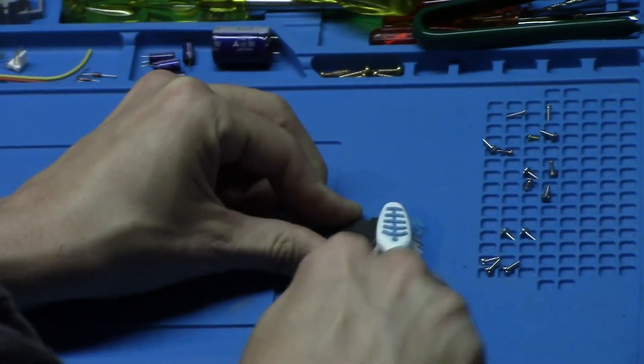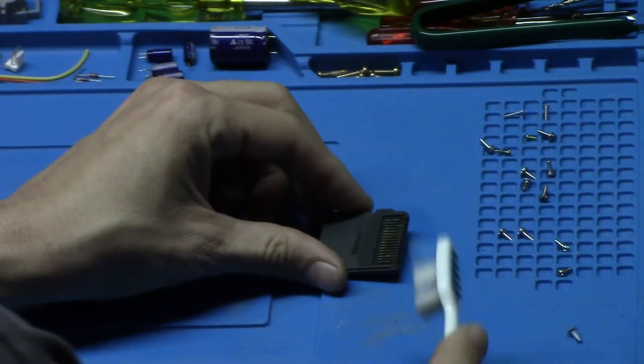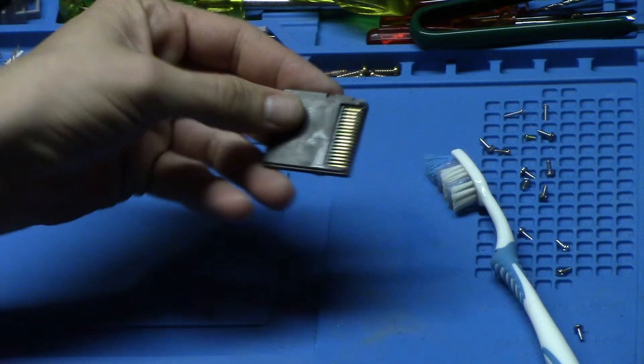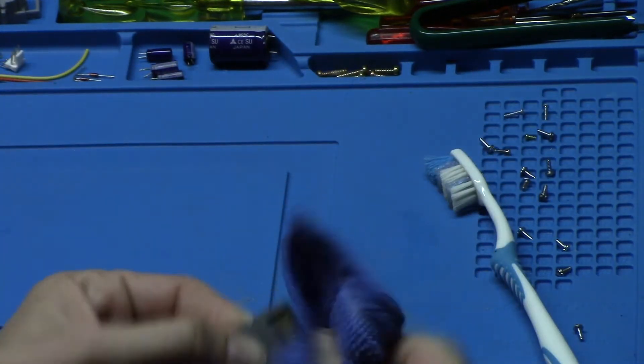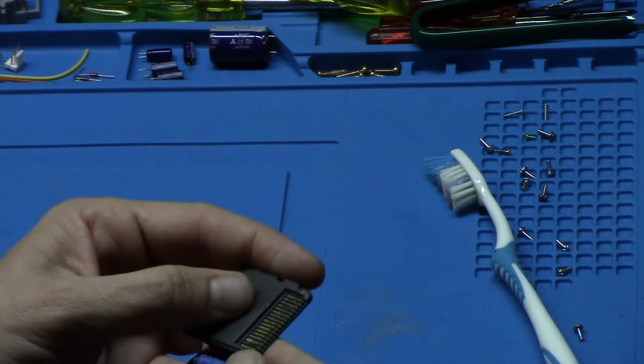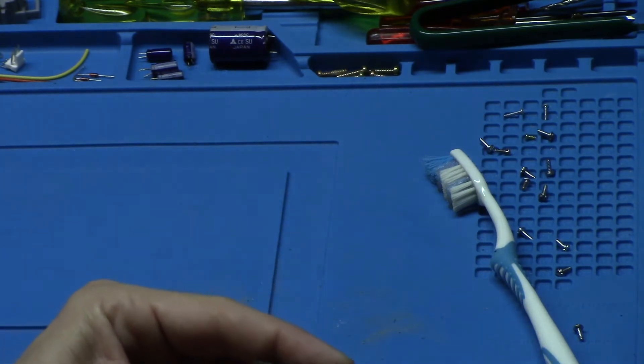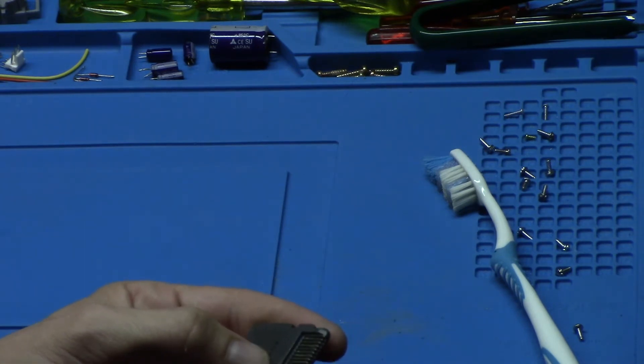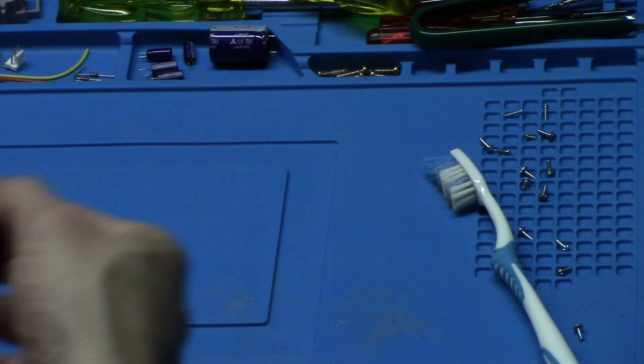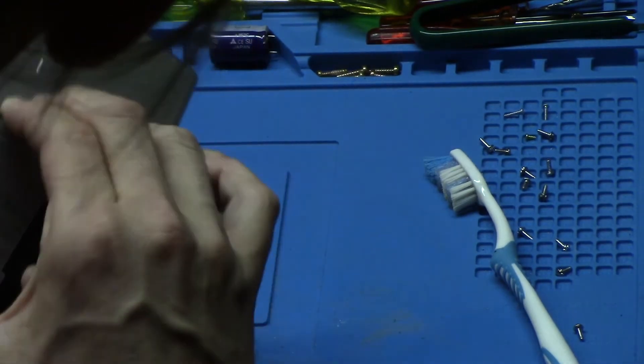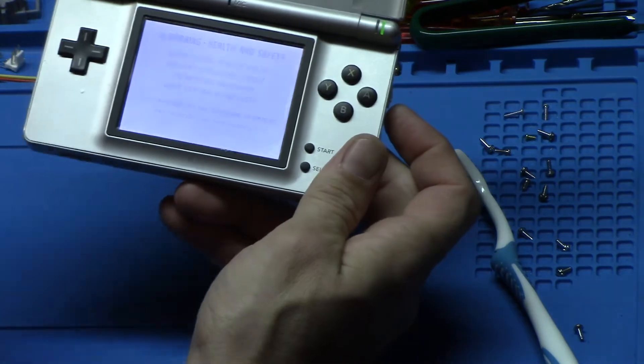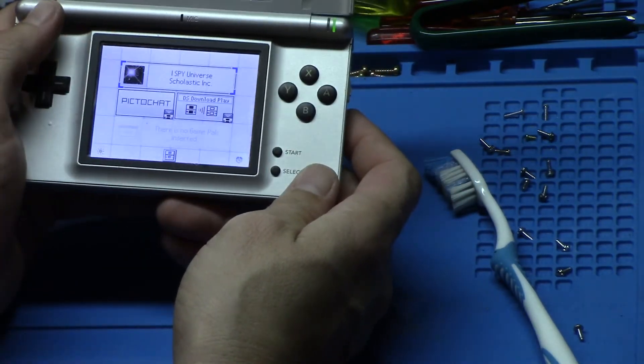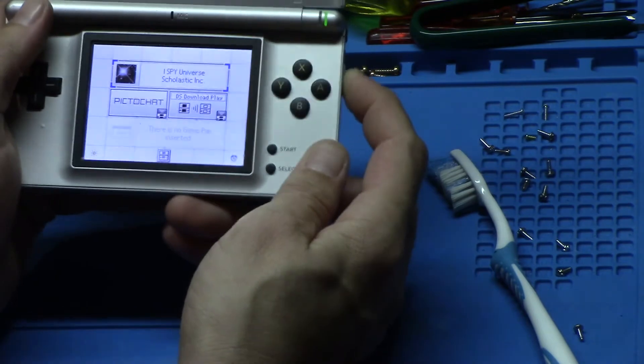You can buy replacement shells. They like snap together or whatever, but they're not the greatest either, but they will work. Alright, let's see how this one does. I Spy Universe. Alright.